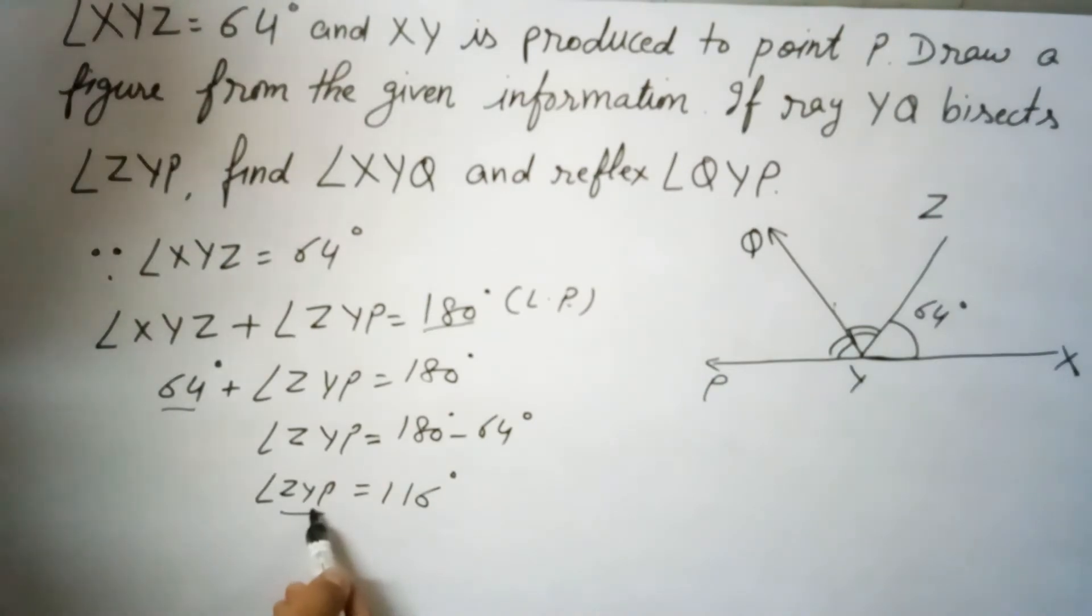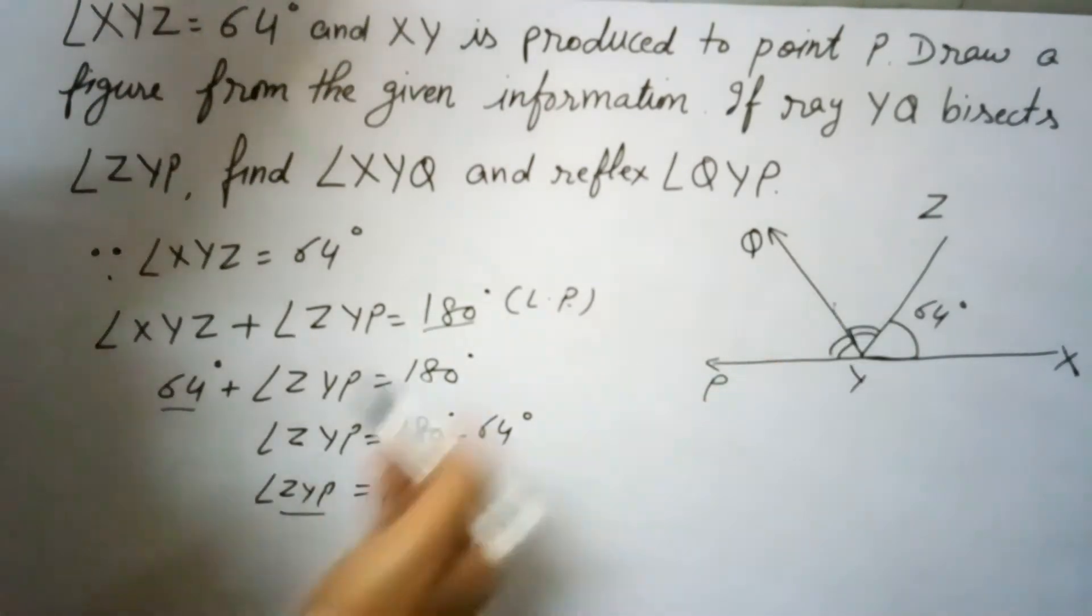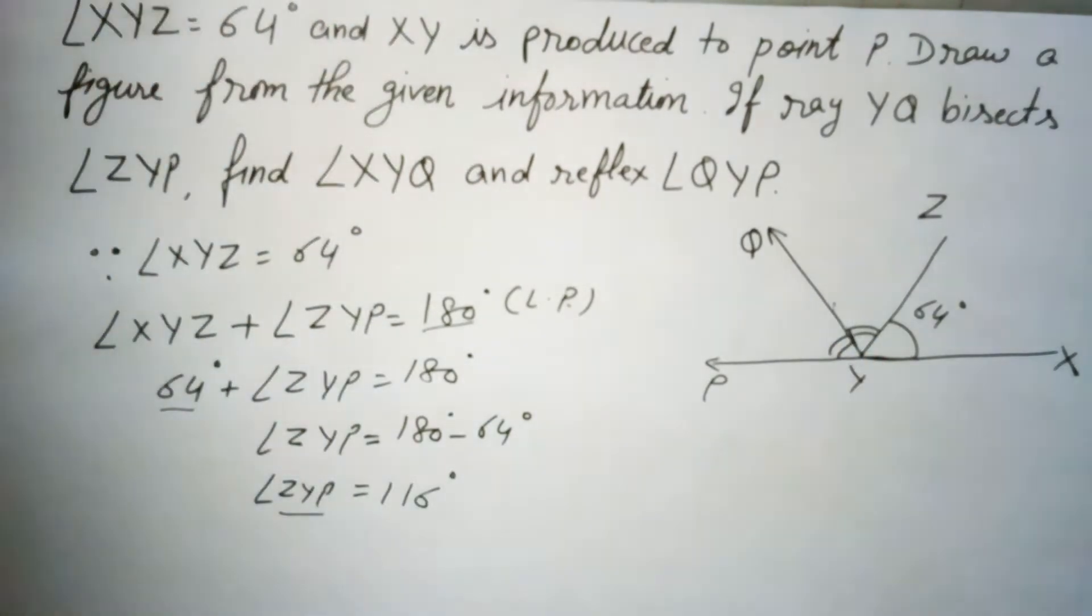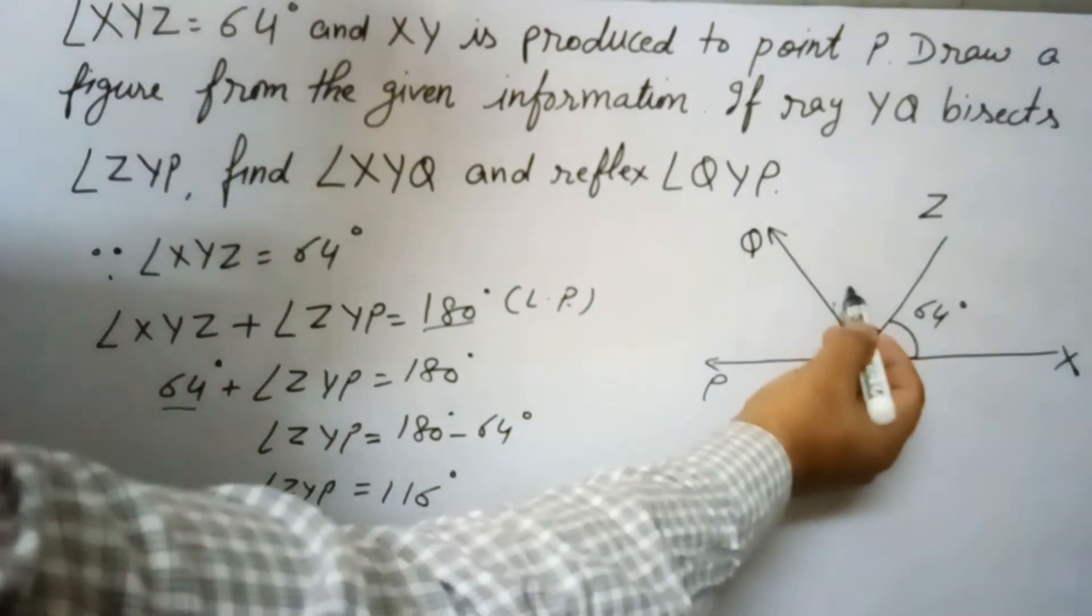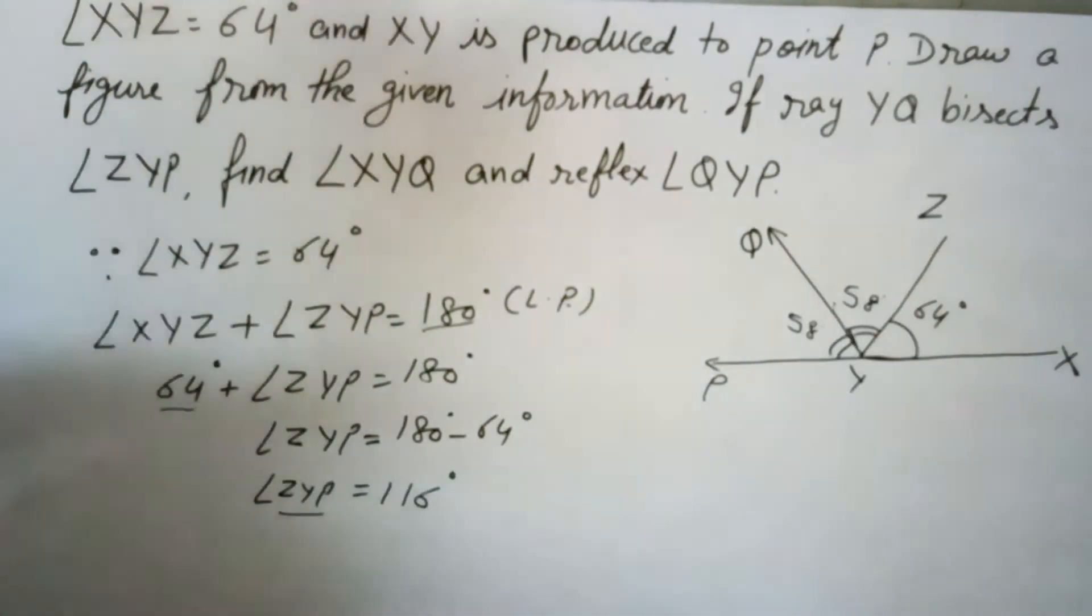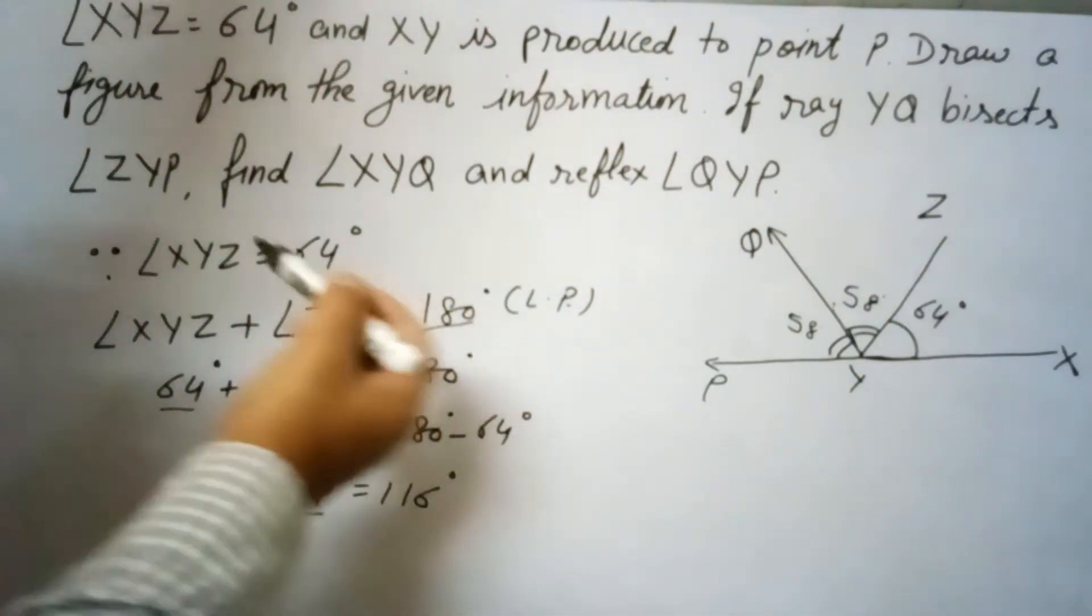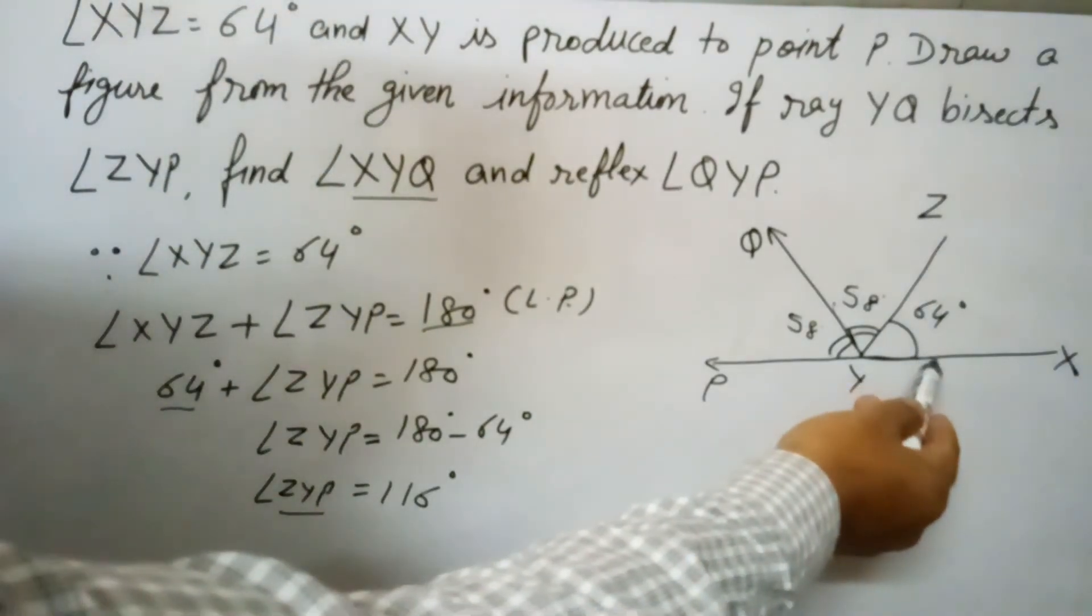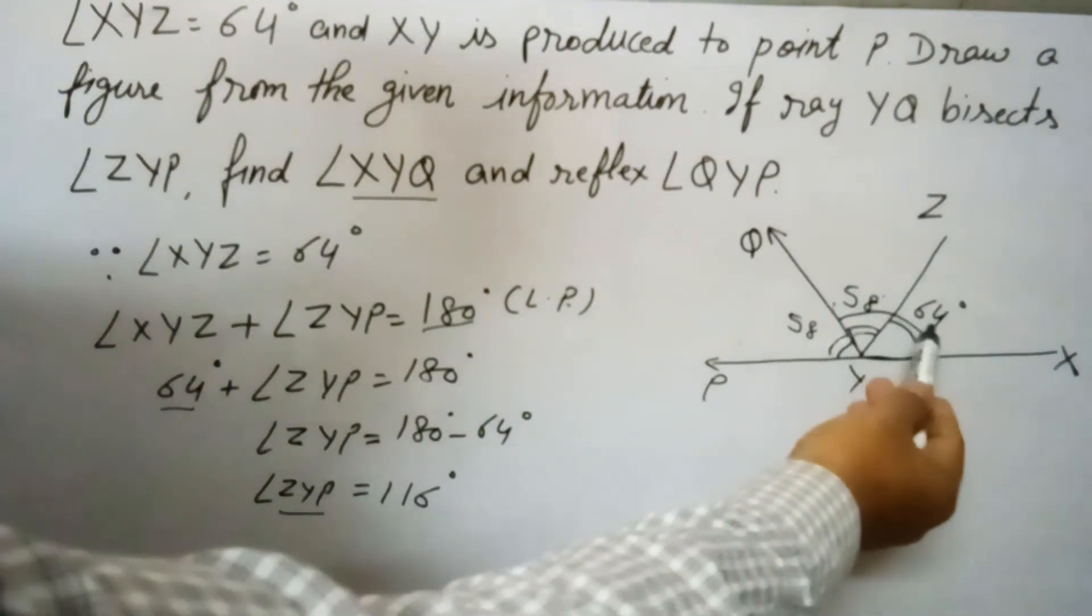Now because YQ is the bisector of angle ZYP, therefore this angle is half of 116 degrees, means this is 58 degrees. So this angle will be 58 degrees and this angle will also be 58 degrees. And now because we want to find angle XYQ, so angle XYQ is the sum of these both angles, 64 and 58.